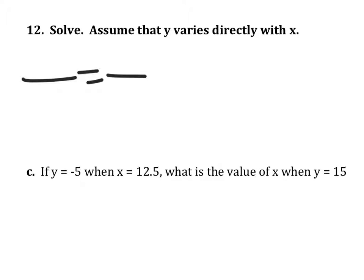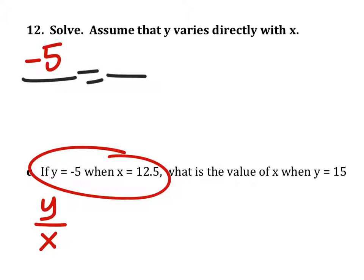So we set it up using two fraction lines and an equal sign. Once again, we'll do y's over x's, which gave us some corresponding values. Y is negative 5 when x is 12.5.